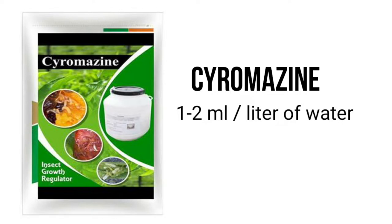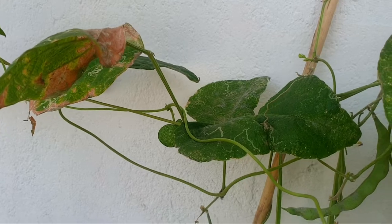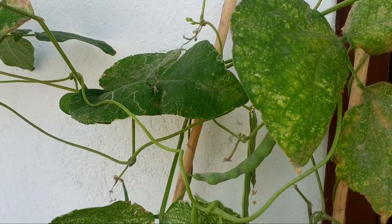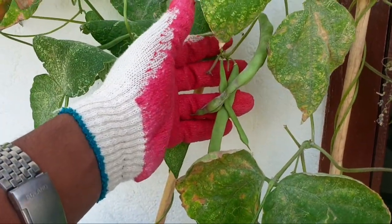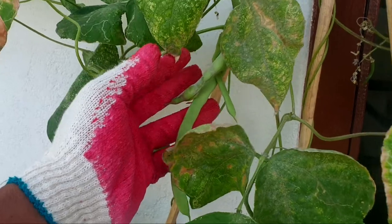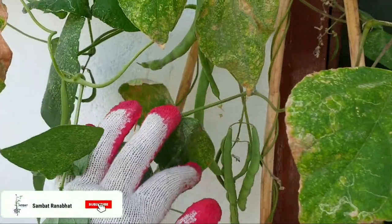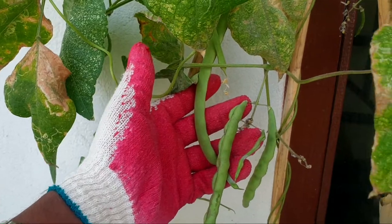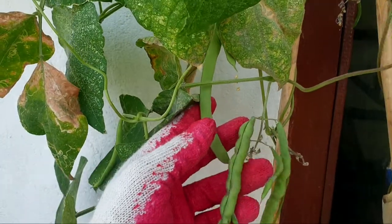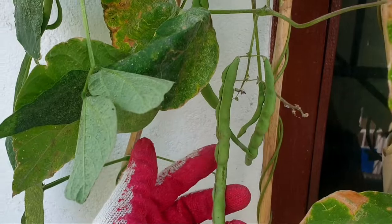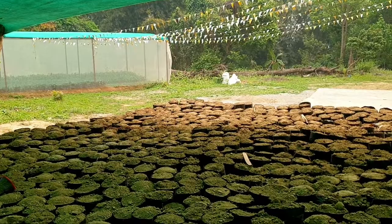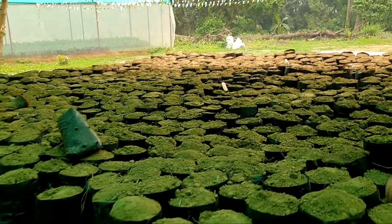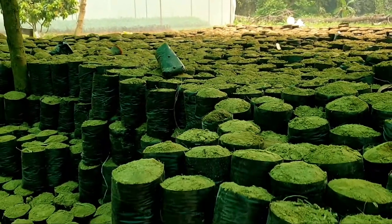Insecticide can be used to spray 1.2 grams per liter of water and spray. In this case, we are going to have to apply this water for 7 days.